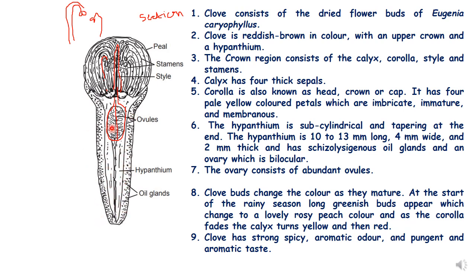The globular portion is the crown, and the cylindrical portion is called the hypanthium. The crown consists of calyx, corolla, style, and stamens, because this is an unopened flower bud. The calyx has four thick sepals, and the corolla — also known as the head, crown, or cap — has four pale yellow colored petals which are imbricate in aestivation, immature and membranous. The hypanthium is sub-cylindrical, tapering at the end, 10 to 13 mm long, 4 mm wide, and 2 mm thick.